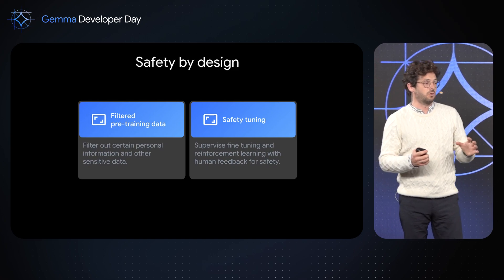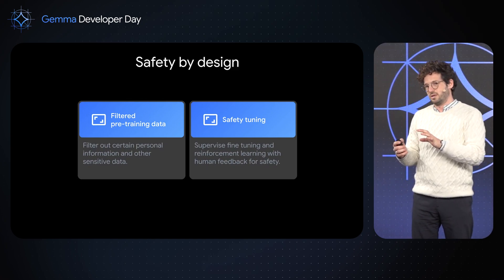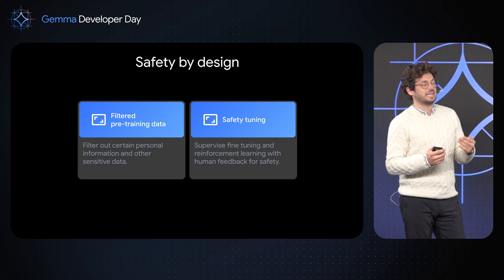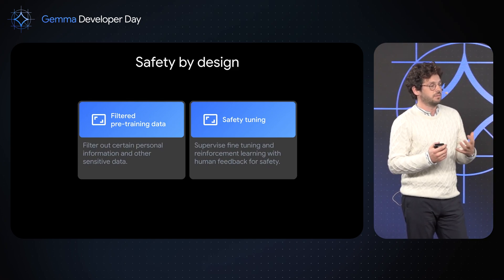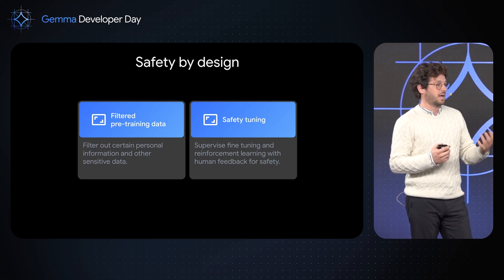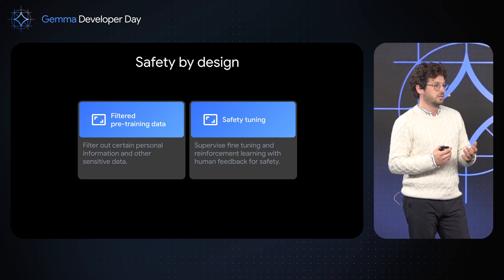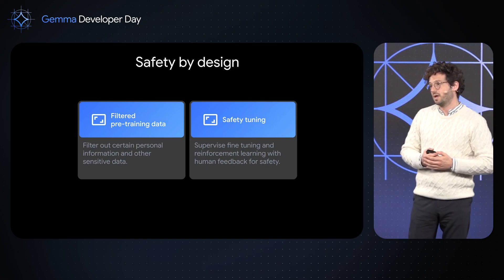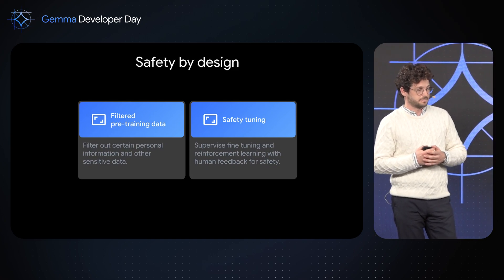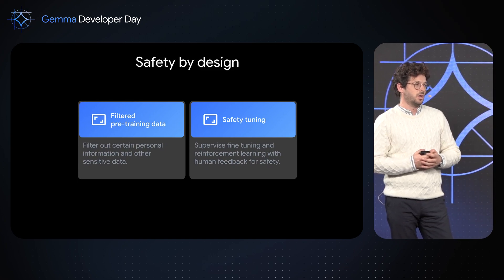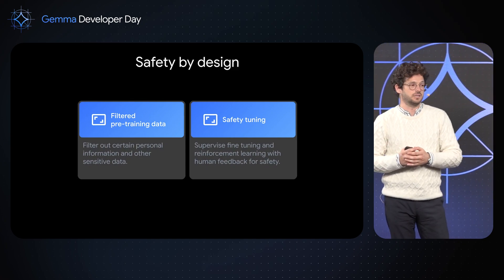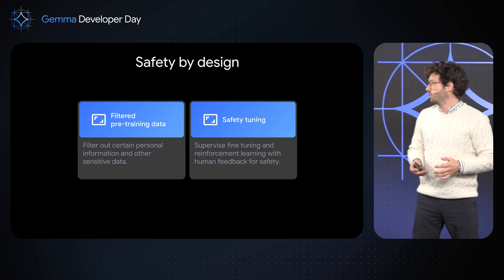First, safety. Both our pre-trained and instruction-tuned models are built to be safe by design. For our pre-training data, we've filtered it extensively — we've removed many potentially problematic elements like personal information. That helps make applications built on top of a pre-trained Gemma safer. For instance, if you want to build a chatbot by tuning pre-trained Gemma, your chatbot is much less likely to output bad information like social security numbers. For instruction-tuned models, we've used techniques like supervised fine-tuning and reinforcement learning with human feedback, specifically for safety, and that has brought really good results.